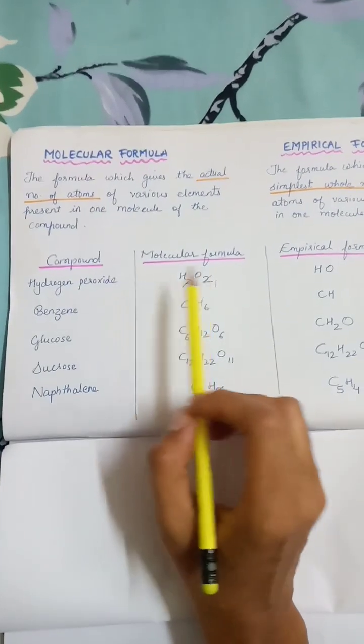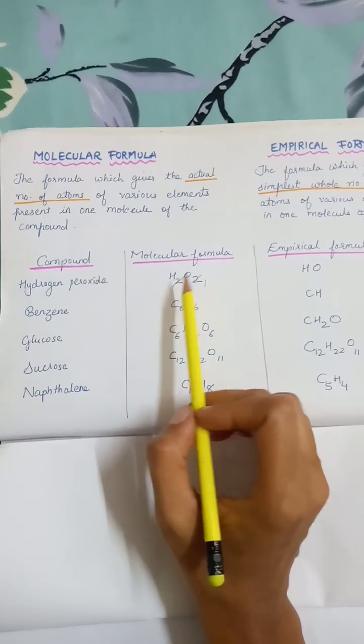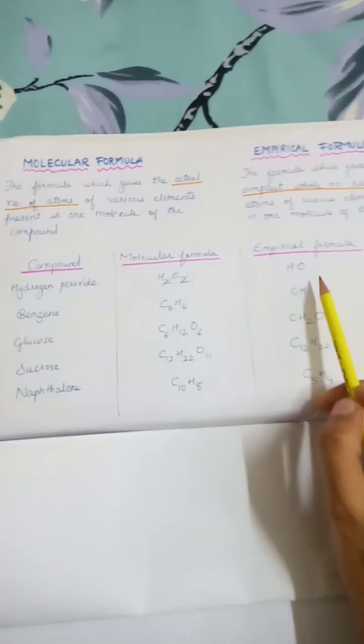Let's take hydrogen peroxide. The molecular formula is H2O2. Whereas when you take the ratio, we get HO.